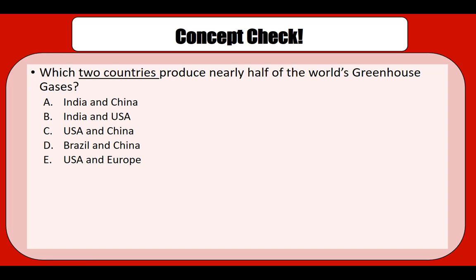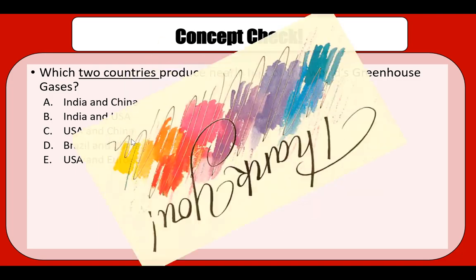Let's do a quick concept check: which two countries produce nearly half of the world's greenhouse gases? Exactly — the US and China. Thank you.